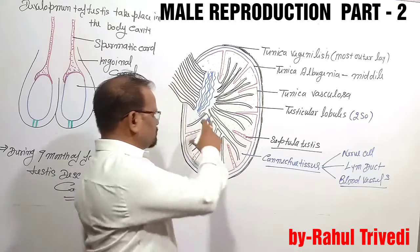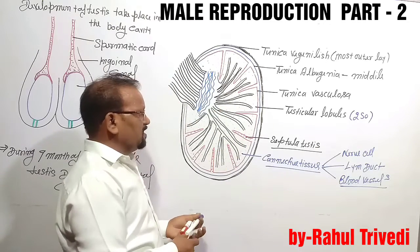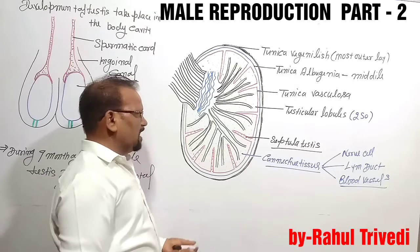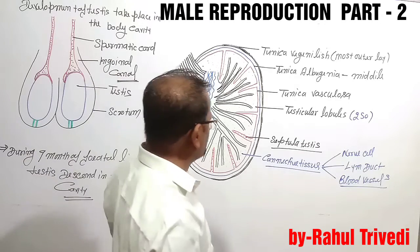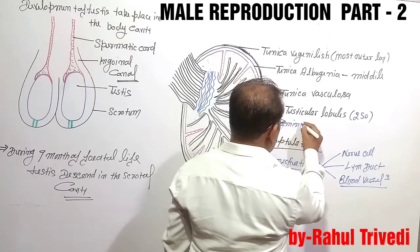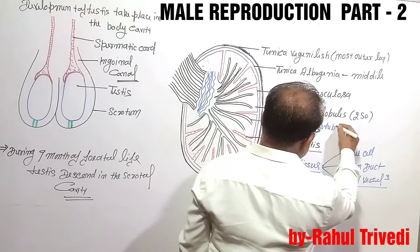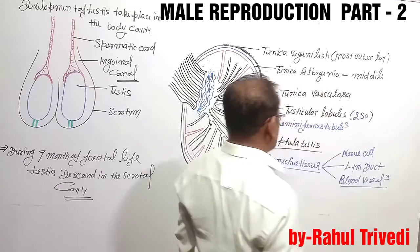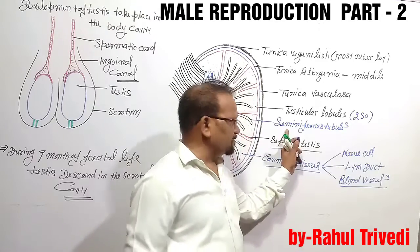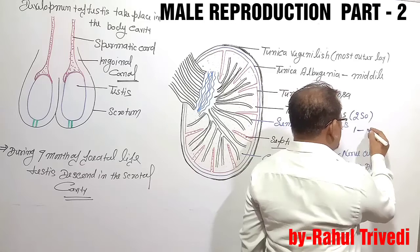As you can see, there are many tubular structures visible here. In each testicular lobule, highly coiled seminiferous tubules are present. The number of seminiferous tubules in each testicular lobule is approximately 1 to 3.